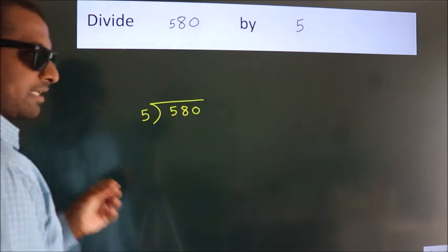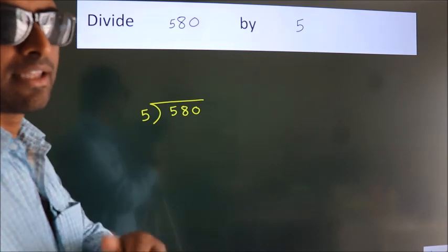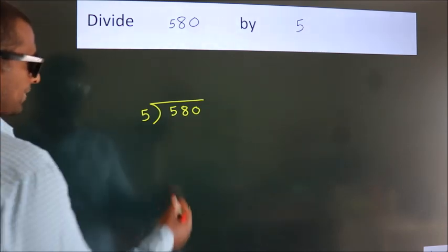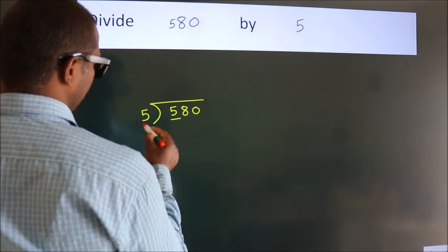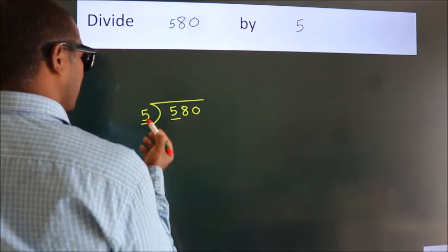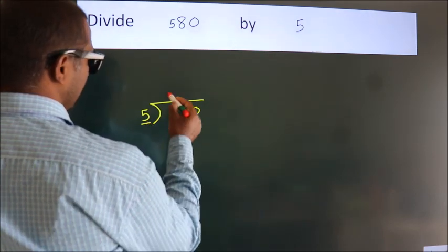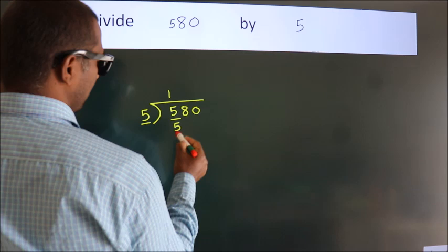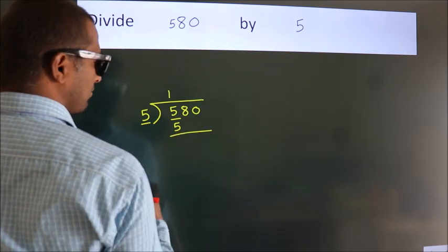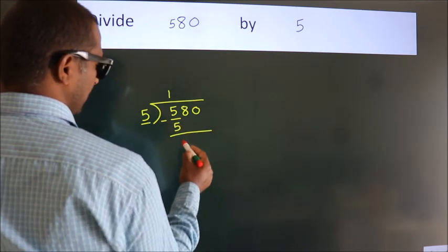This is your step 1. Next, here we have 5, here 5. When do we get 5? In 5 table, 5 once, 5. Now, we should subtract, we get 0.